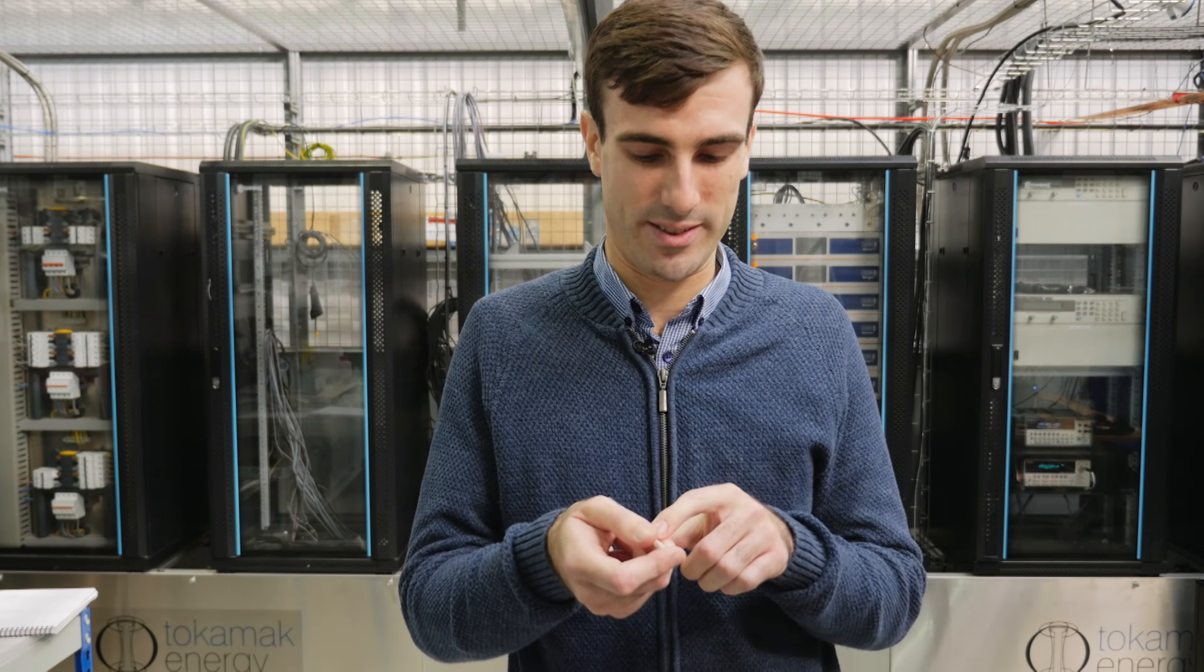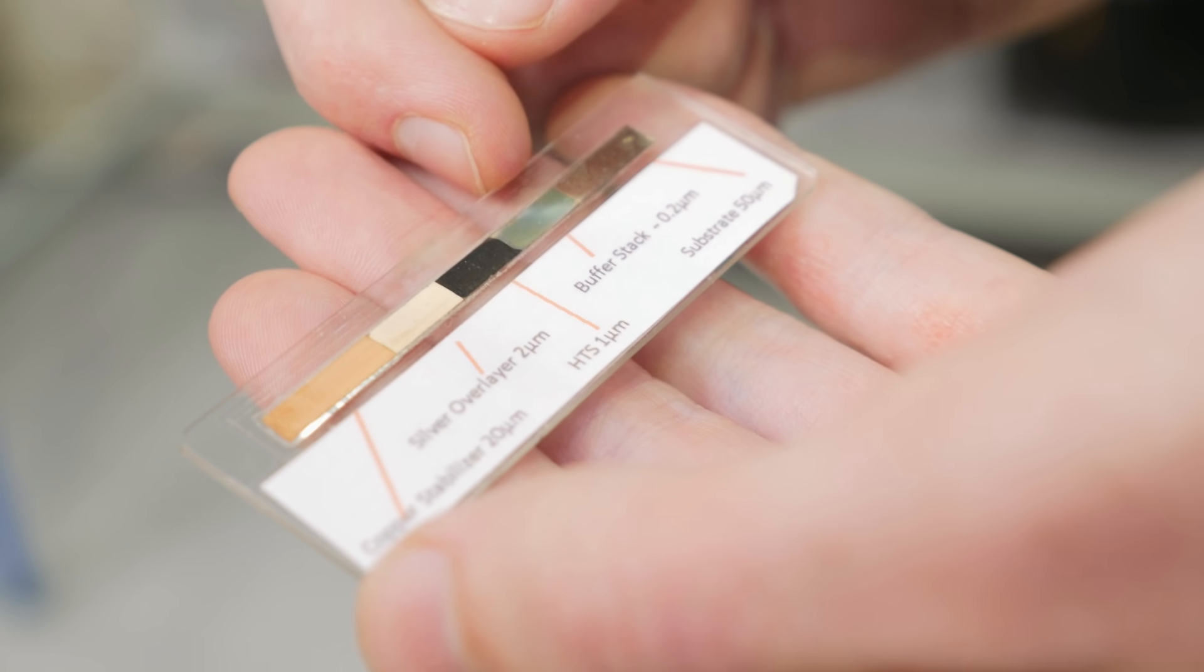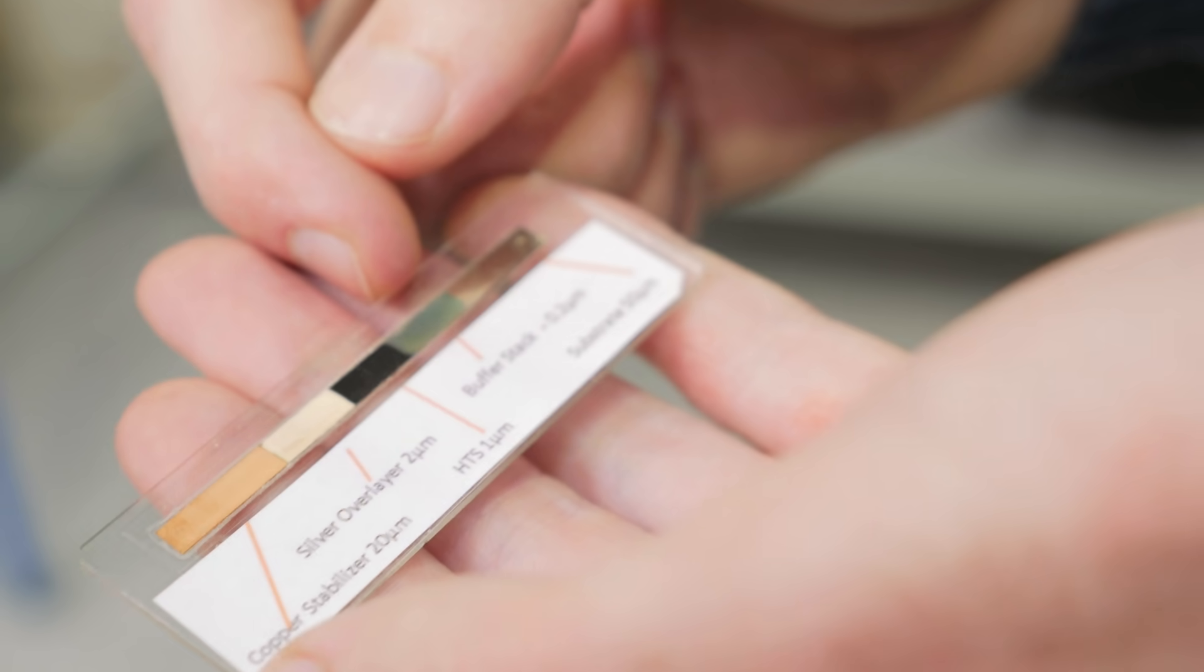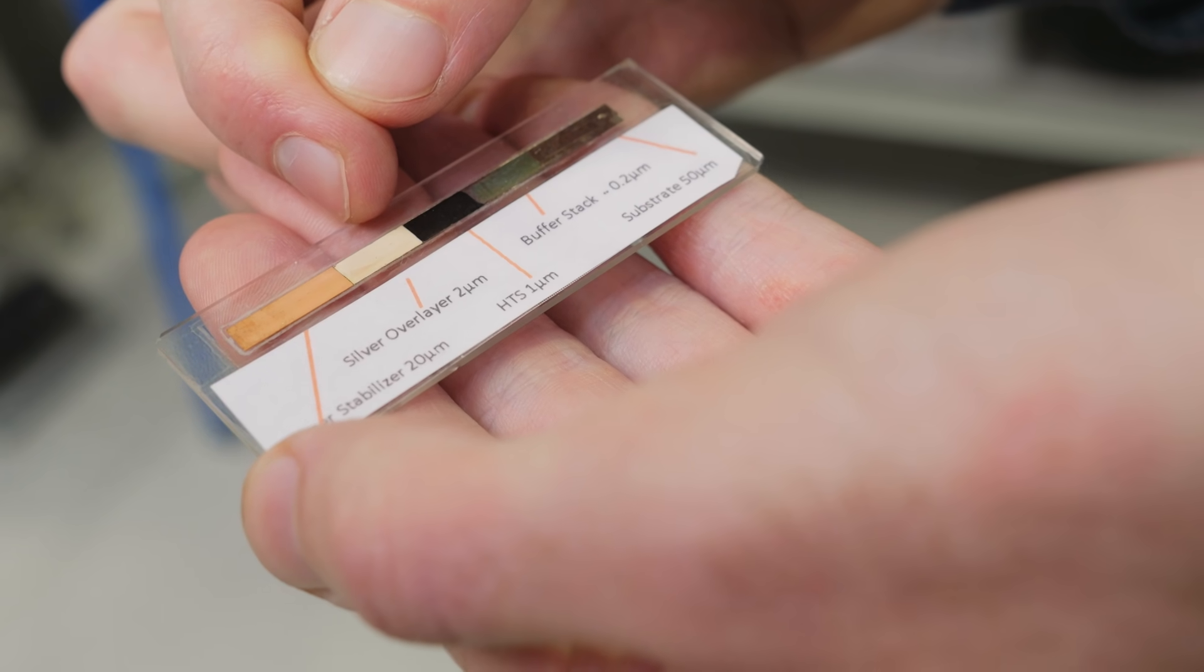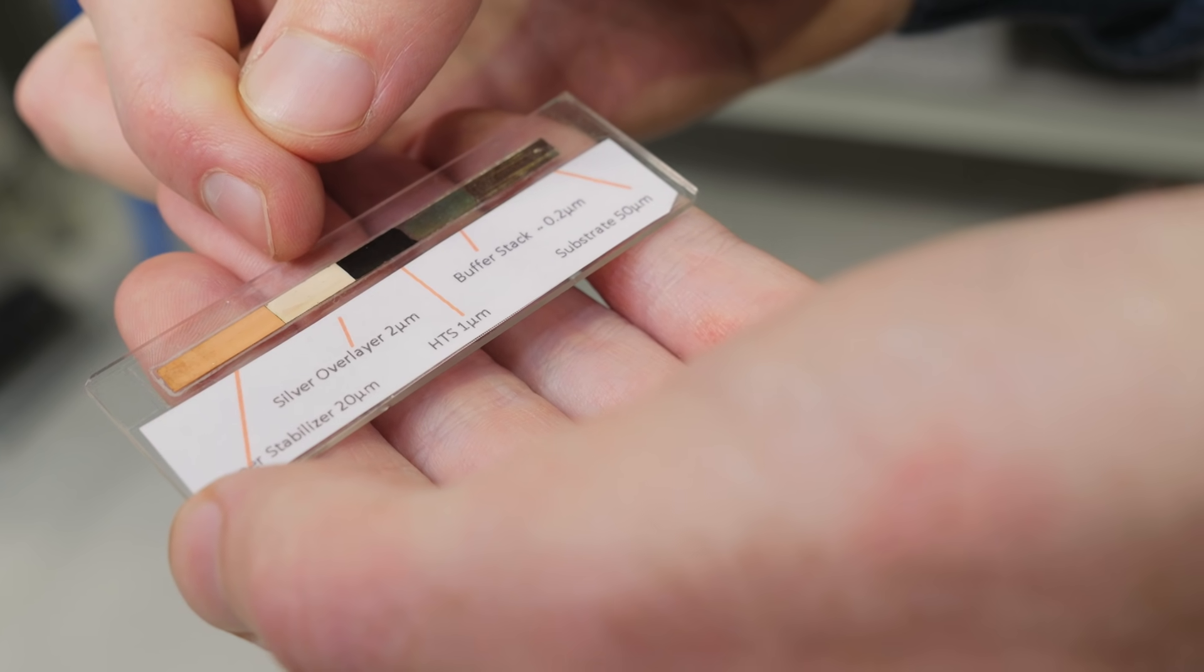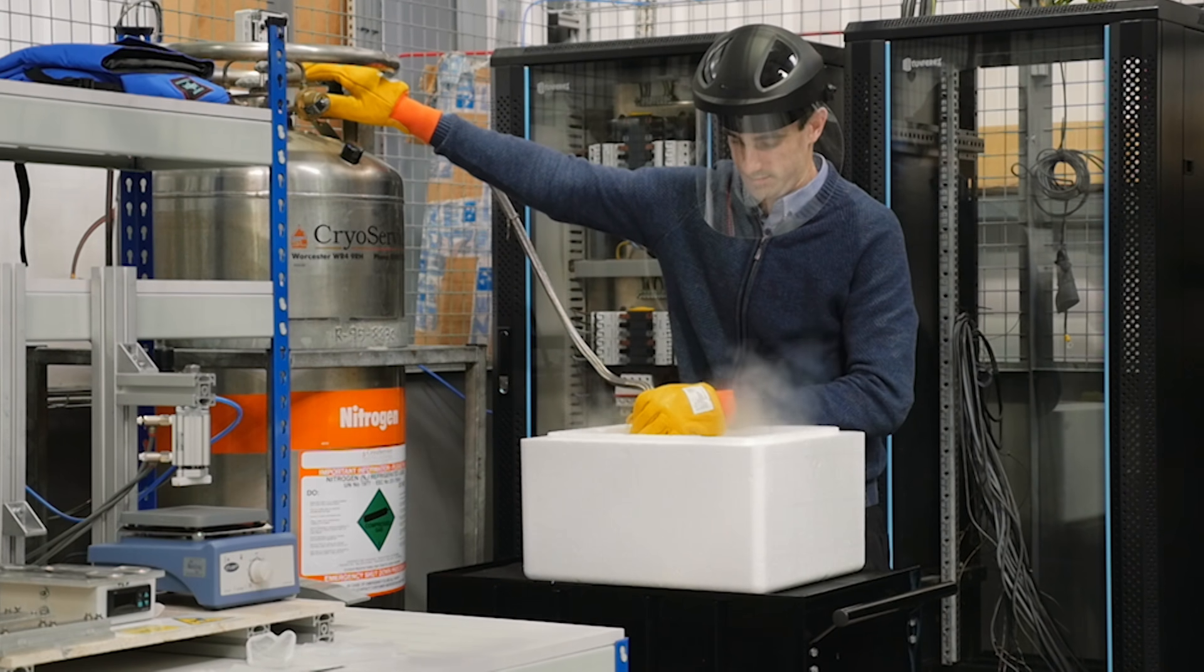So on top of the buffer stack you grow the HTS layer. On top of that you have a layer of silver. The silver goes on to chemically encapsulate the superconductor. The final layer is copper. In the event that the superconductor goes normal, loses superconductivity and starts to heat up, the current has to jump out of the superconductor into the copper so that it can cool back down again.